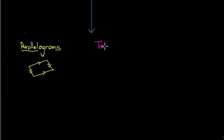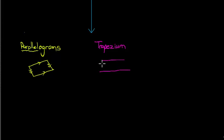Then we get trapeziums. These are all special quadrilaterals — obviously any four-sided thing would be a quadrilateral, but these are special ones. A trapezium is a quadrilateral where only two of the sides are parallel to one another. In other words, a parallelogram is actually a type of trapezium, but one where the other two sides are also parallel.